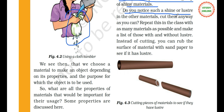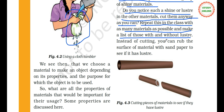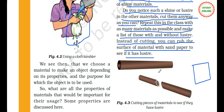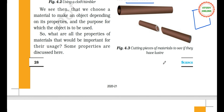Do you notice shine or lustre in other materials? Cut them and check. Instead of cutting, you can rub the surface of the material with sandpaper to see if it has lustre. Take an aluminium vessel or copper wire and rub it a little — you will see how much shine comes out. We are cutting pieces of materials to see if they have lustre.